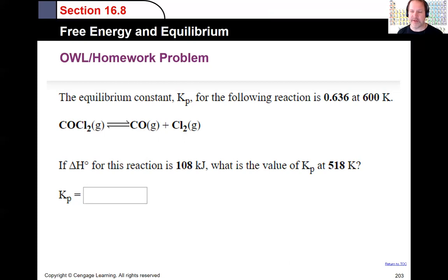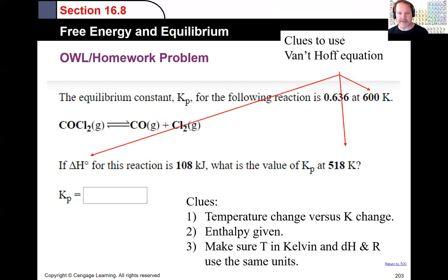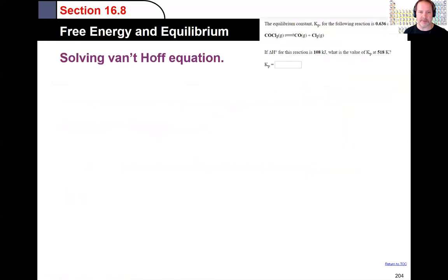Well, how are we supposed to know we use the van't Hoff for this? There are some dead giveaways here. The clues are enthalpy is given, temperature at two different temperatures, and an equilibrium constant at one of those temperatures. They don't have to tell you to go use the van't Hoff equation. So now we can use the equation and start plugging in the numbers here.